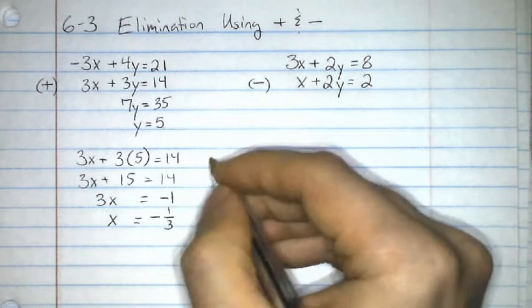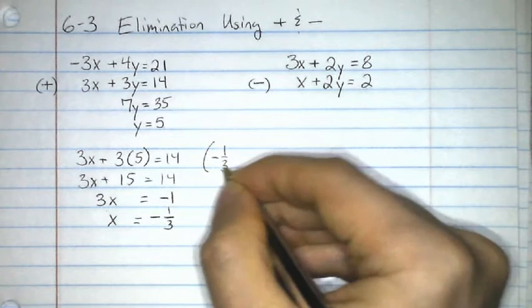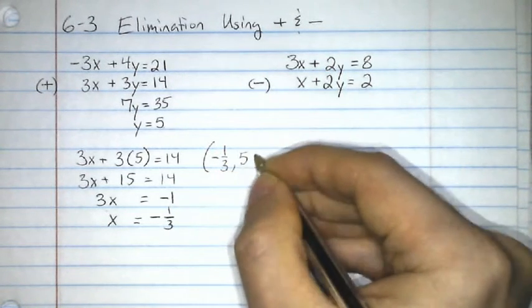So now, I put the two together. My x is negative 1 third. My y value is positive 5.